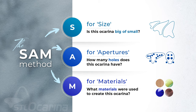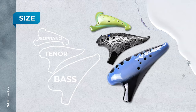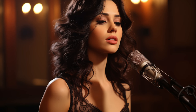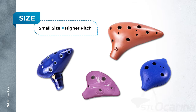Finally, we will delve into Materials used to craft the ocarina, as different materials give ocarinas unique characteristics in terms of sound quality and aesthetics. Let's kick things off with Size. When you spot a small ocarina, you can expect a sound similar to a soprano singer. A smaller size means a shorter air column inside, and when you blow into it the air vibrates faster, producing high notes that dance in the air.